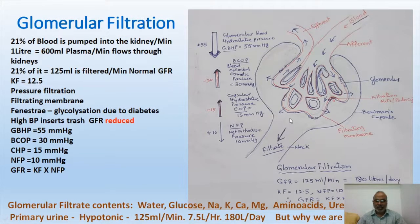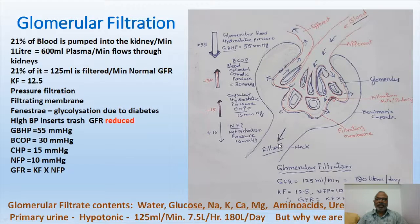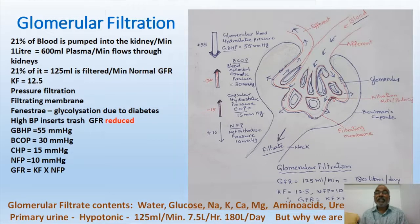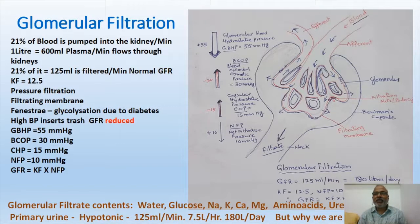This glomerular filtration is the primary step for separating waste materials, followed by selective reabsorption. The filtrate contents are: water, glucose, sodium, potassium, calcium, magnesium, amino acids, and urea. The glomerular filtrate is also known as primary urine; it is hypotonic to blood and to the interstitial medium. If all primary urine were eliminated, we would lose water, ions, amino acids, and vitamins — that is why reabsorption is necessary.